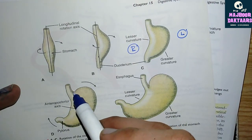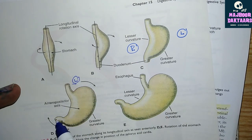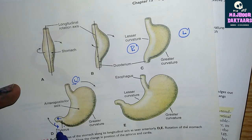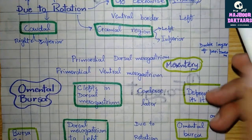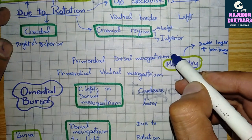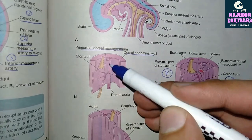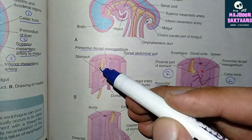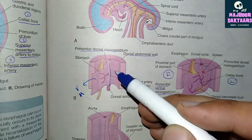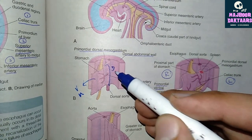The cranial portion of the stomach moves inferiorly and to the left, while the caudal portion moves superiorly and to the right. The mesentery of the stomach includes a ventral mesentery and a dorsal mesentery. The mesentery connecting the stomach to the ventral wall is known as the primordial ventral mesentery, and the mesentery connecting it to the dorsal wall of the embryo is known as the primordial dorsal mesentery.